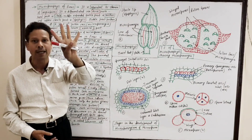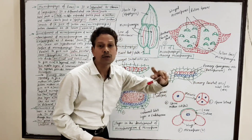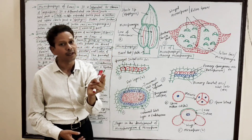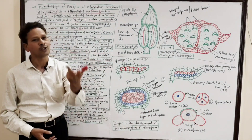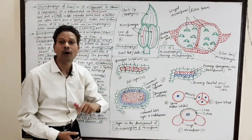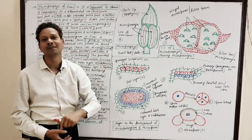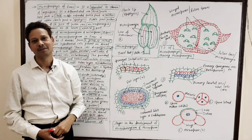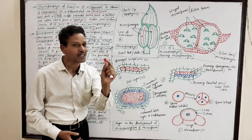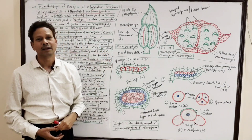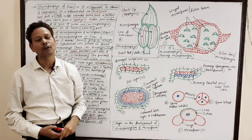The sporangial wall is four-layered and is derived from the primary parietal cells, which undergo both periclinal and anticlinal divisions. The outermost wall layer is the endothecium, then two middle layers, and the innermost layer of this microsporangial wall is secretory and glandular — that is the tapetum. The tapetum secretes nutrients which provide nourishment to the developing microspores or pollen grains.